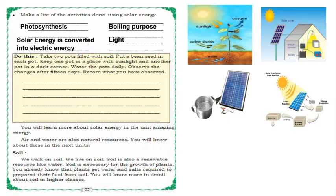Take two pots with soil. Put a bean seed in each pot. Keep one pot in a place with sunlight and another pot in a dark corner. Water the pots daily. Observe the changes after 15 days. Record what you have observed. You will learn more about solar energy in the unit 'Amazing Energy.'